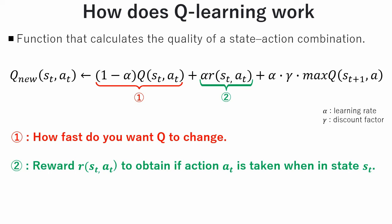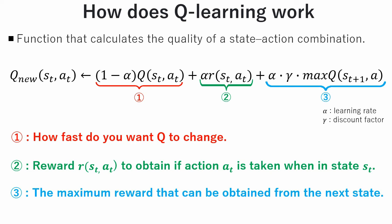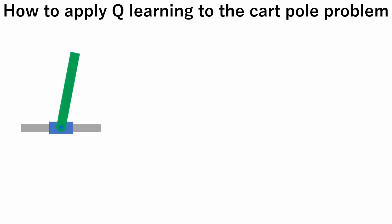In the second term we set how much influence a reward will have on the next q value. The third term represents the maximum reward that can be obtained from the next state. Here is how q-learning method is implemented to solve the cart-pole problem.